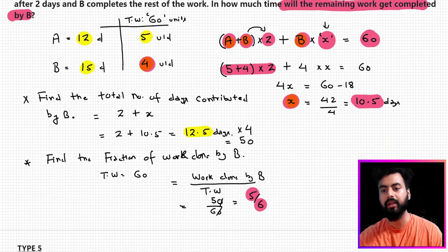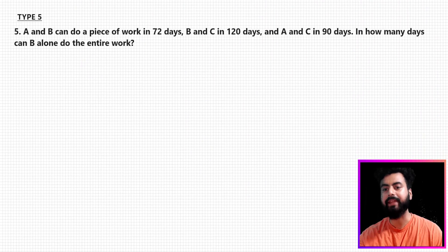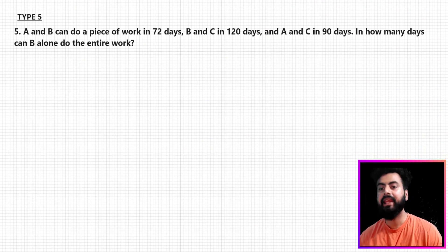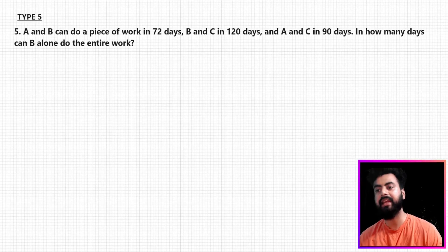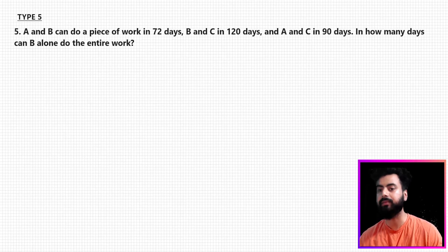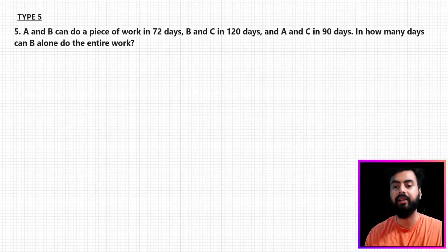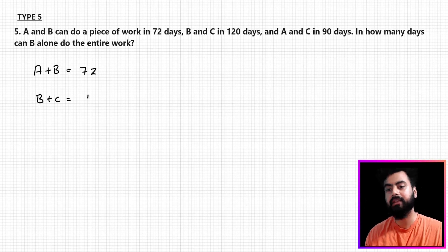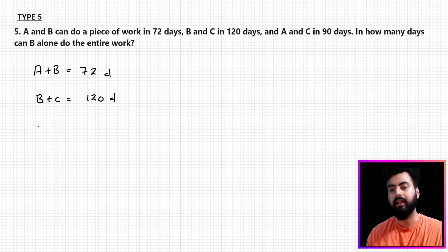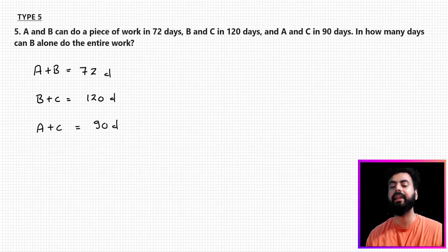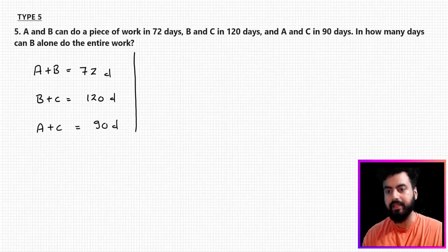Now let me show you one more important type — Type 5. A and B can do a piece of work in 72 days, B and C can do the same work in 120 days, and A and C can do it in 90 days. In how many days can B alone do the entire work? Let me write down the given data: A+B complete work in 72 days, B+C in 120 days, A+C in 90 days.